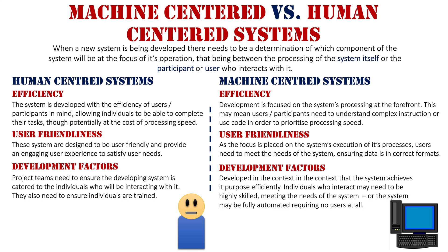On the machine-centered side, development is focused on the system achieving the purpose of its processing first and foremost. Individuals who interact with the system may need to be highly skilled and meet the demands of the system, and they need to be trained for that. Or these systems can be fully automated, where people involved are more on the maintenance side. Development must factor in how humans interact with the system and what type of data they need to input for the system to accept it.